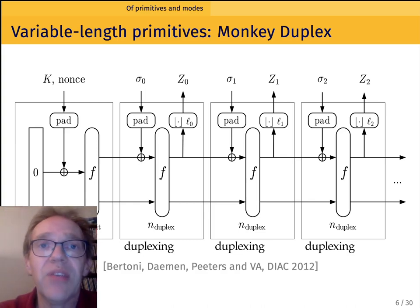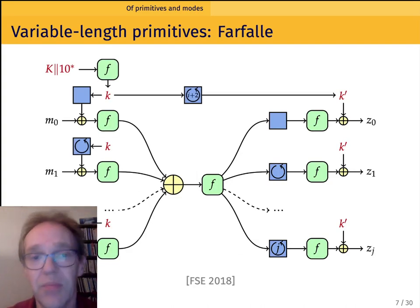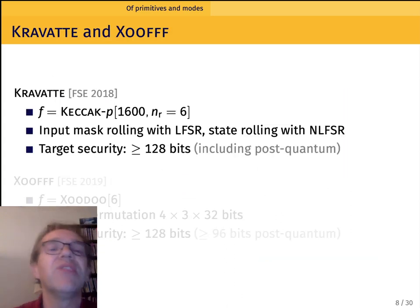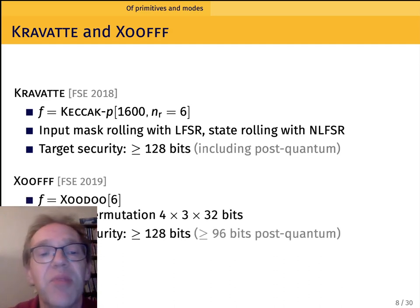The monkey duplex is serial. A more parallel function is Farfalle. So it's a construction to build a function with variable length input and variable length output based on a permutation, in this case symbolized by F. And it has several instances, Kravatte and Xoofff. Kravatte based on the Ketchak-f and Ketchak-p permutations, and Xoofff based on Xoodoo, more recent, a bit more lightweight permutations.